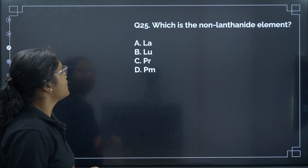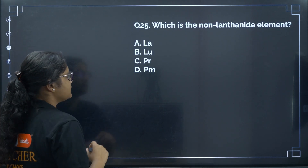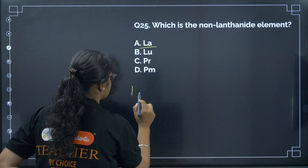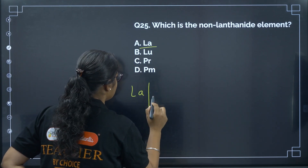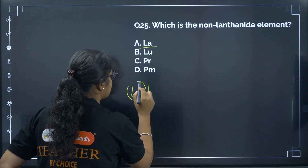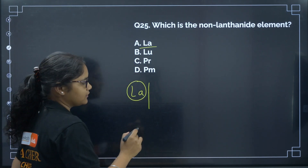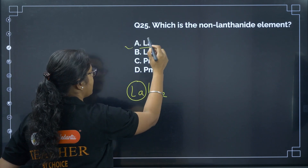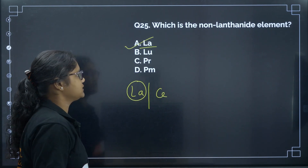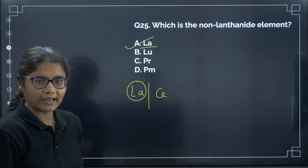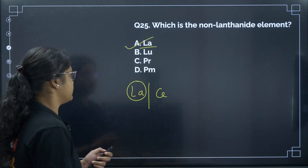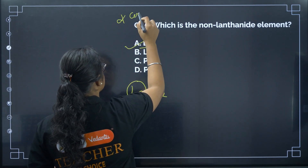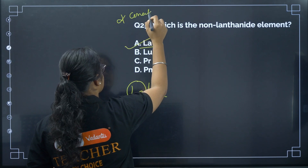Question 25: Which is a non-lanthanide element? The lanthanide series starts from lanthanum, but the first element of the f-block lanthanide series is cerium — lanthanum itself is not a lanthanide. The correct answer is option A — lanthanum. This is a very important concept-based question.